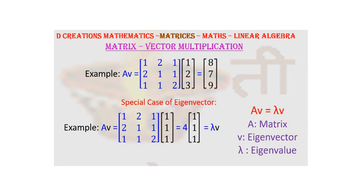So 1 into 1 is 1 plus 2 into 2 that is 4 plus 1 into 3 that is 3. So 1 plus 4 plus 3 that gives you 8.